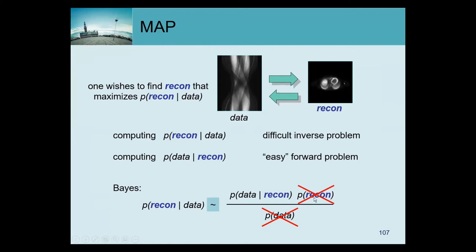For convenience we deleted the prior knowledge about the reconstruction, which converts the problem such that those two are equivalent — we can do the easy thing instead of the difficult thing. But of course that was wrong, and now we start regretting it because if we keep iterating and maximizing this likelihood, our image gets uglier and uglier — extremely noisy. We know that tracer distributions and attenuation maps don't look like that, so we undelete the prior and put something in there that encourages smooth images.